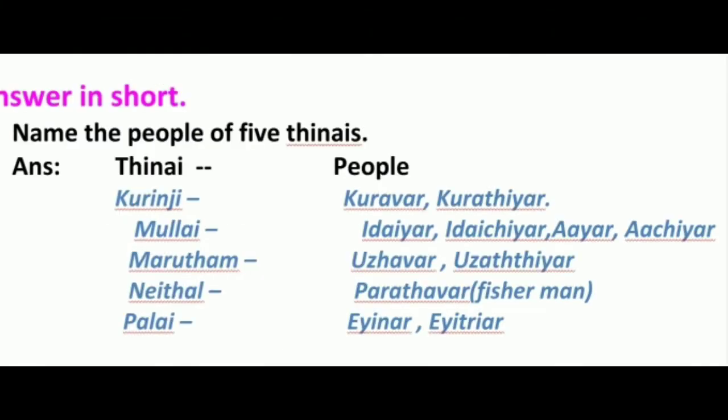Answer in short. Name the people of the five Thinais. Thinai and People: Kurunji - Kuravar, Kurathiyar. Mullai - Idaiyar, Aayar, Aachiyar.